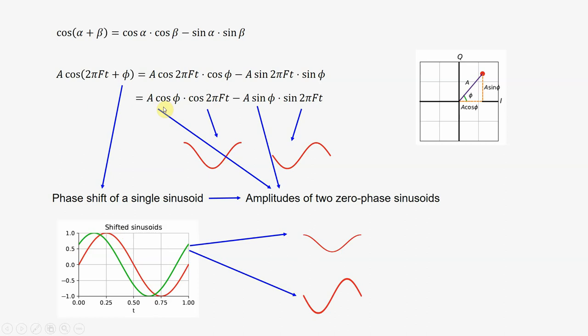When we measure those two amplitudes we have A cos φ and A sin φ. And we know that after the cosine amplitude measurement and the sine amplitude measurement, they are called in-phase and quadrature, IQ. The name comes from there.